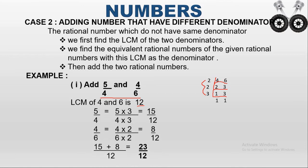For the first rational number 5/4, we find the equivalent fraction with denominator 12 by multiplying numerator and denominator by 3: (5 × 3) / (4 × 3) = 15/12. For 4/6, we multiply numerator and denominator by 2: (4 × 2) / (6 × 2) = 8/12. So the equivalent fraction for 4/6 is 8/12.